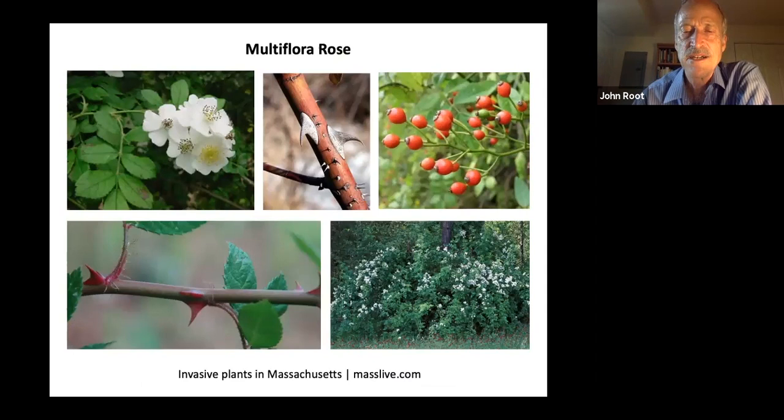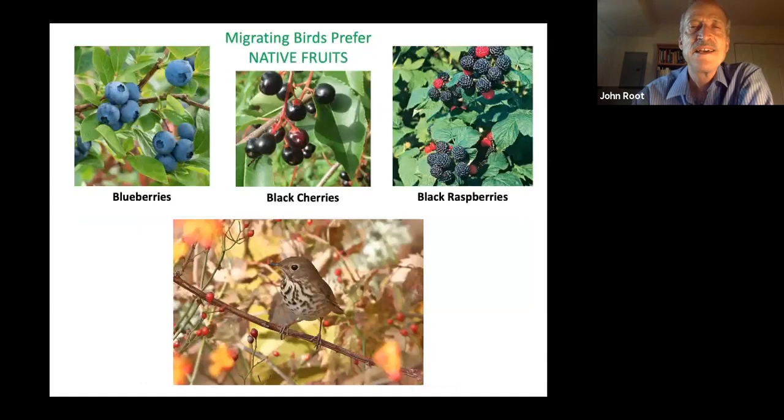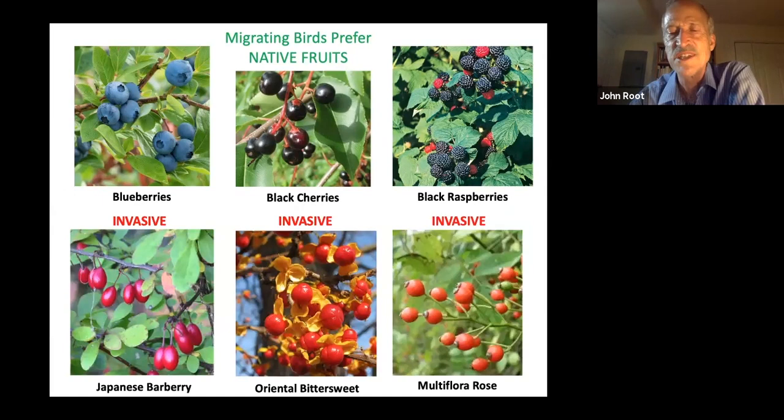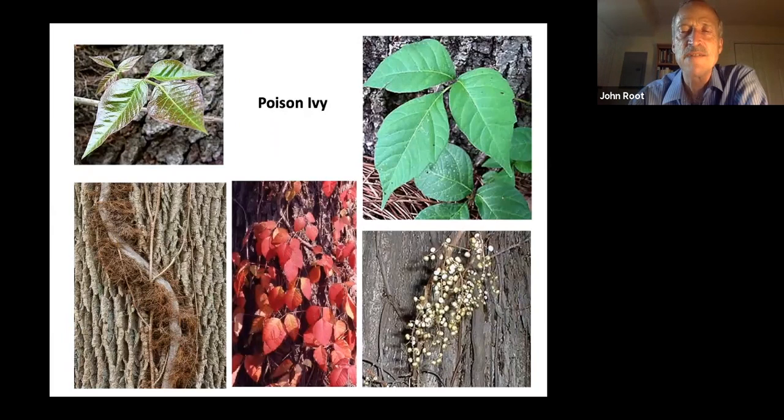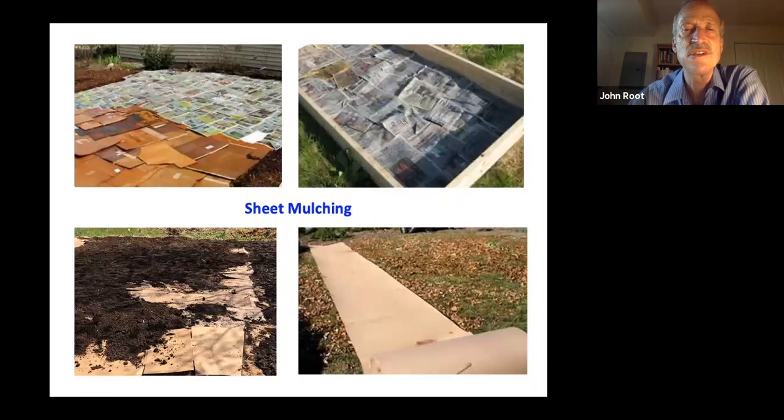Migrating birds prefer native fruits — they somehow know that they are more nutritious than invasives such as Japanese barberry, oriental bittersweet, and multiflora rose, even when the invasives are far more common. Poison ivy is a native plant and birds do eat its fruits. But if you want to control poison ivy or any other unwanted plant on your property, why bother going to all the trouble of digging or rototilling when you can simply smother the vegetation? That's also being kinder to the microbes — the no-dig or no-till approach.